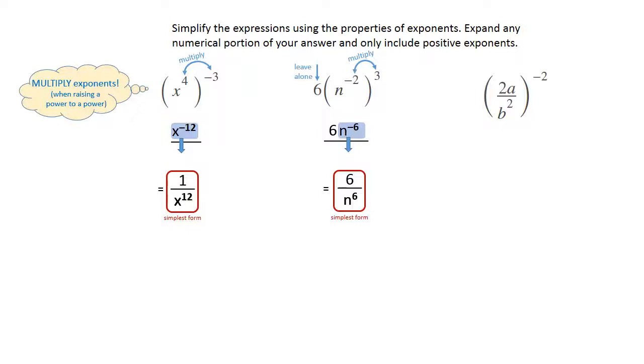In the third example, you've got a 2 and an a inside the parentheses. Both of those have to raise to that outside power, so you're going to write 2 to the negative 2 power and a to the negative 2 power. Then draw your fraction bar and multiply the b exponent with the outside, so that's going to be b to the negative 4.